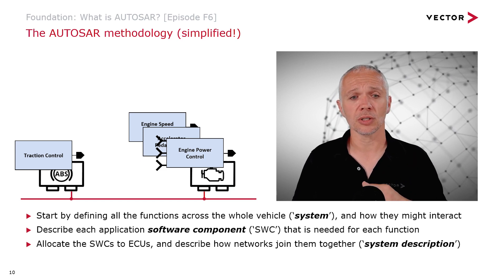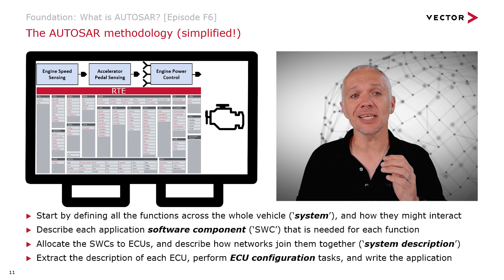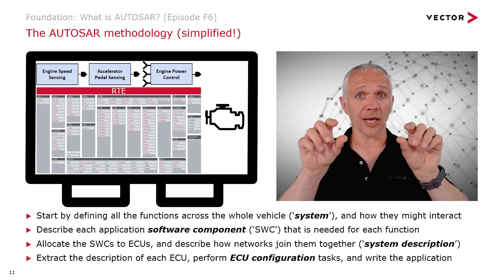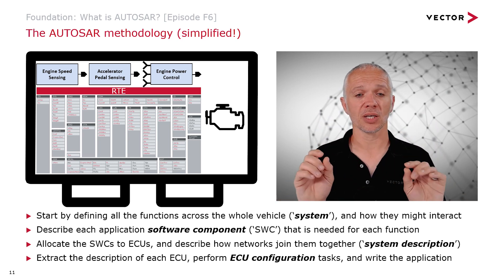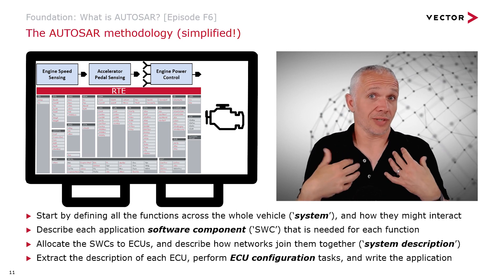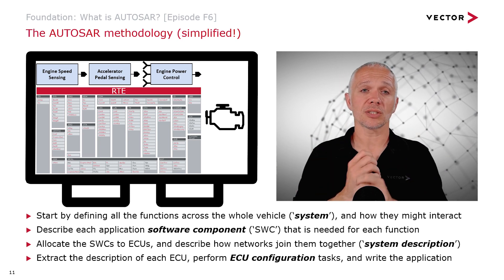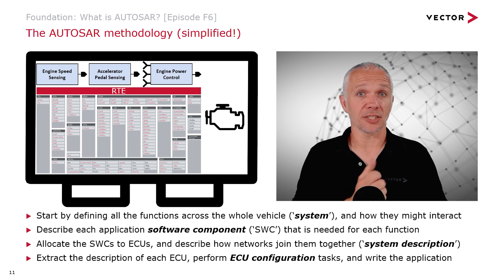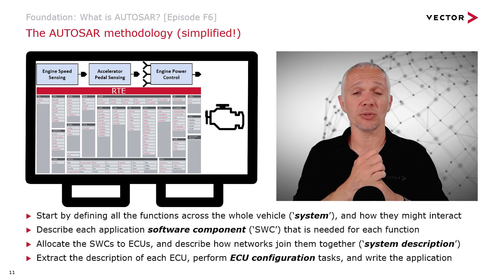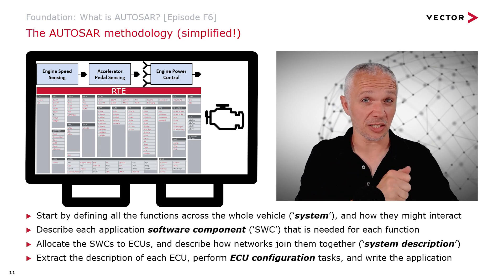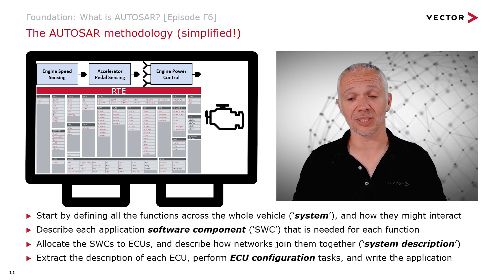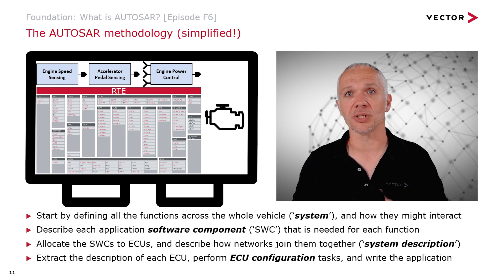This is the system description. Once we've done that, for each ECU we can extract the description of the software and communication needed, and give that to the supplier chosen for that ECU — or we can develop the ECU ourselves. Once the ECU extract is available — which is a type of ARXML — and the software component description, also a kind of ARXML, we can perform ECU configuration tasks, which produces another type of ARXML. We can also write the application, typically done with either C code or model-based implementation tooling.